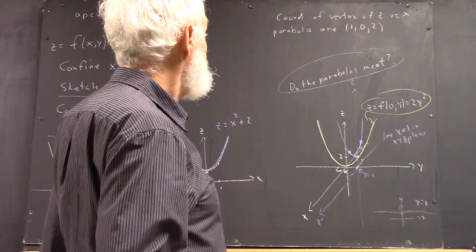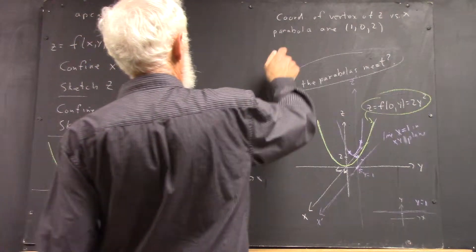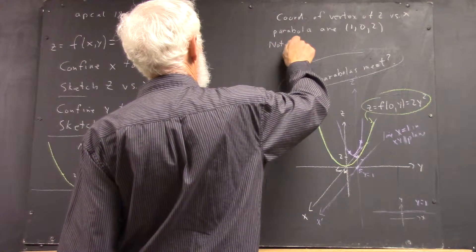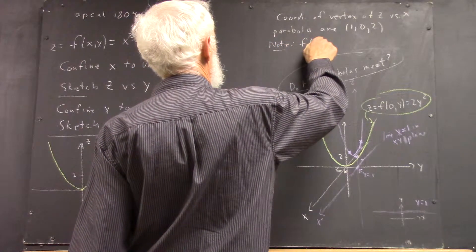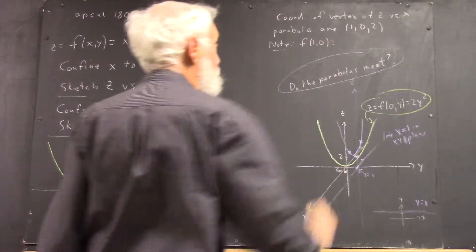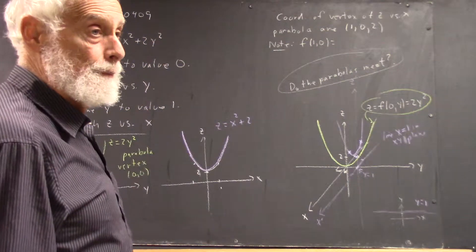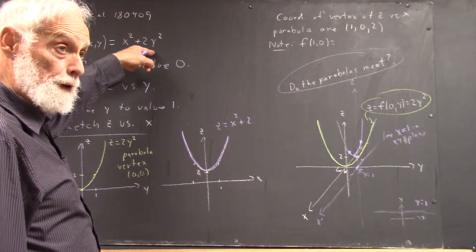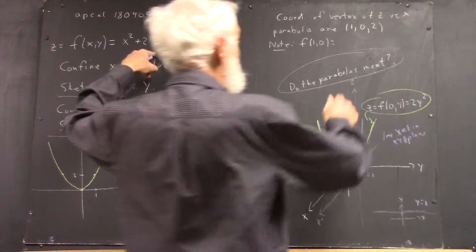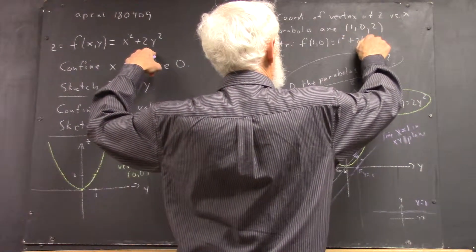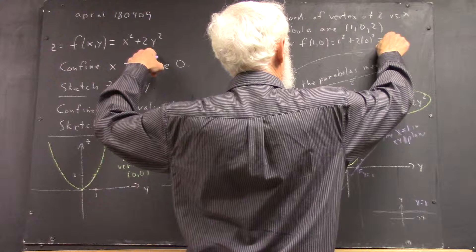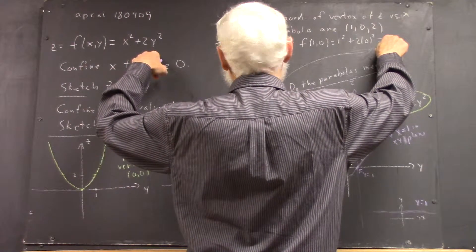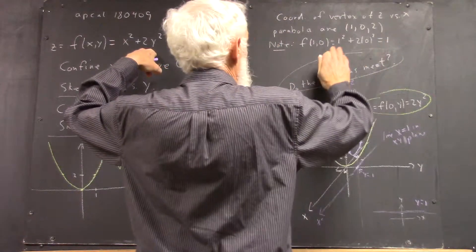I'm going to show you some stuff. What is f of one, zero? F of one, zero is one squared plus two multiplied by zero squared. And I've got that backwards.